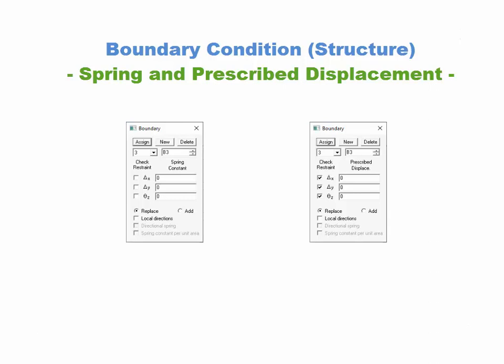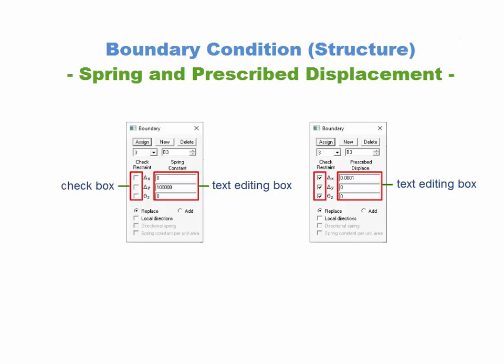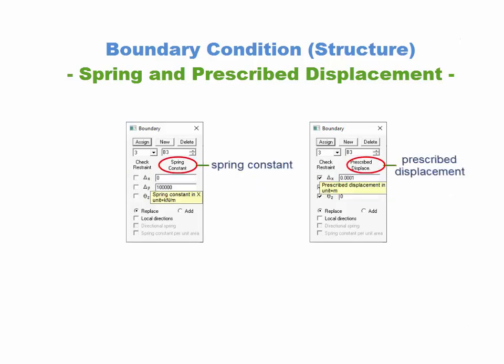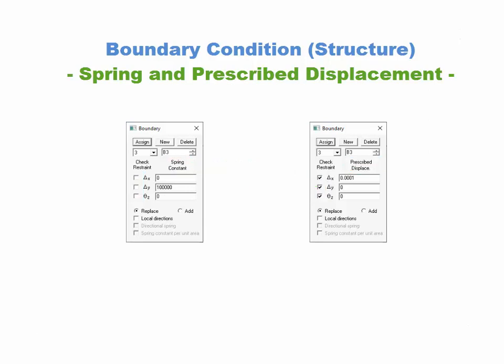The Boundary Condition dialog has a text editing box paired with each of the checkboxes, specifying the state of restraint. These textboxes are used for inputting either the spring constants or prescribed displacements. The spring constants are applicable for unrestrained degrees of freedom, and the prescribed displacements are applicable for restrained degrees of freedom. This tutorial demonstrates the whole procedure of modeling, assigning and solving stages, so that the effect of spring constants and prescribed displacement can be understood.